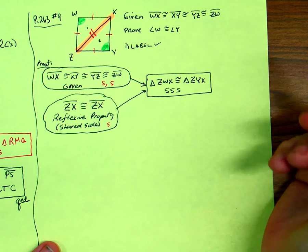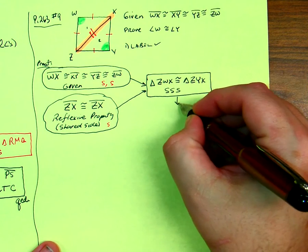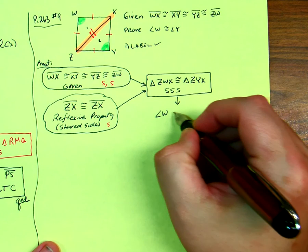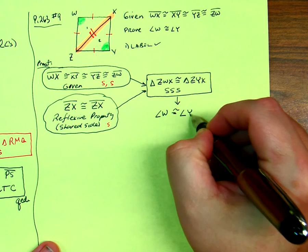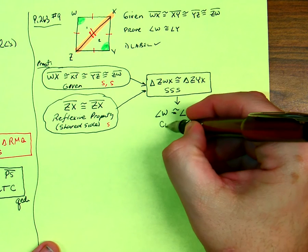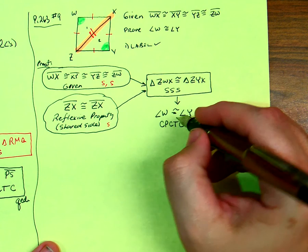So now, can we just jump to what we need to prove? And what's the reason? CPCTC - congruent parts of congruent triangles are congruent.